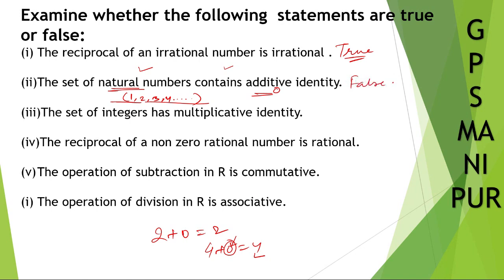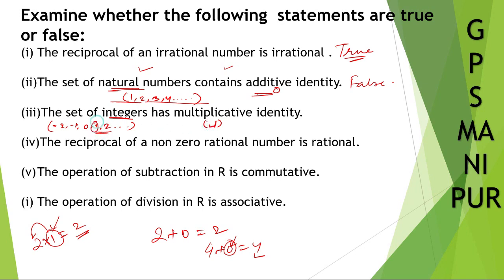The set of integers has multiplicative identity. What is multiplicative identity? If you multiply 1 to 2, then it will become 2. So 1 is called multiplicative identity. Now integers — what do you mean by integers? Like minus 2, minus 1, 0, 1, 2 — all these negative and positive numbers including 0 are called integers. So 1 is included here. So the set of integers has multiplicative identity — true.